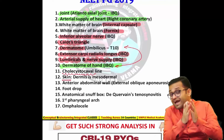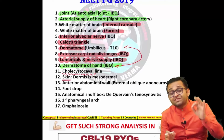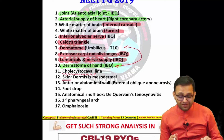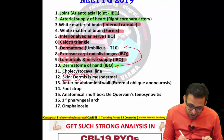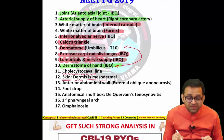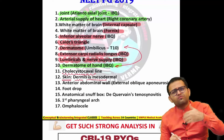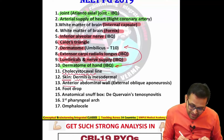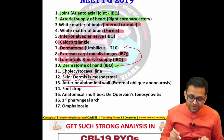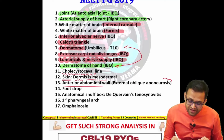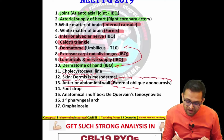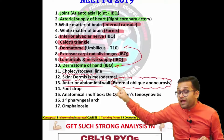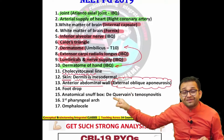The entire skin subject is important, starting from histology of the skin. There was a question asking whether the dermis is ectodermal, endodermal, or mesodermal — the answer is mesodermal. Similarly, regarding the anterior abdominal wall, the external oblique aponeurosis was asked.